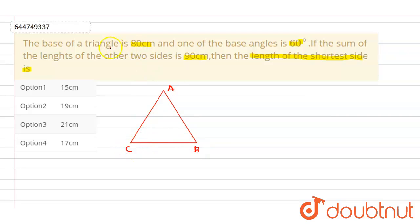Now length of base is 80 cm, this is given. Let's say this is 80 cm. And one of the base angles is 60°, this is also given. So let's consider that this is our 60°.